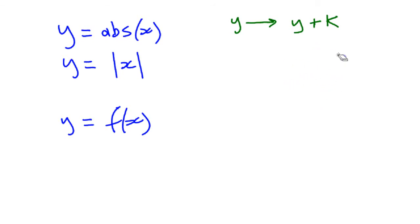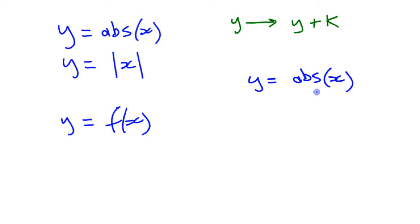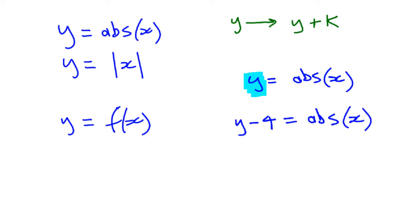So the function you'd get here — if you were making this change — you'd take your y equals absolute value of x, but you're going to replace y with, say, y minus 4: so y minus 4 equals absolute value of x. It would work with any function; here it's y minus 4 equals f of x.